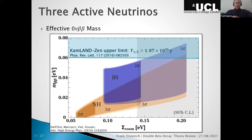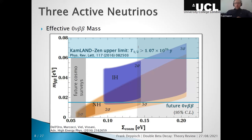Showing a similar plot with m_ββ on the vertical axis and the cosmological sigma — the sum of neutrino masses — on the horizontal axis, in linear scale. The normal ordering case has a funnel region where contributions cancel, appearing only at the bottom part. What's important is the relation between neutrinoless double beta decay limits and cosmological limits. Future sensitivities aim to go below the inverted hierarchy scenario, and future cosmological surveys aim to measure the sum of neutrino masses rather than just setting limits.